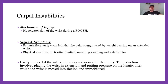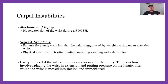Mechanism of injury is hyperextension of the wrist during a FOOSH. Signs and symptoms: pain aggravated by weight-bearing on the wrist, swelling, deformity, and tenderness. It's easily reduced if intervention occurs soon after the injury. Reduction involves placing the wrist in extension, putting pressure on the lunate, then moving the wrist into flexion and immobilizing it. This stabilizes the scapholunate relationship.